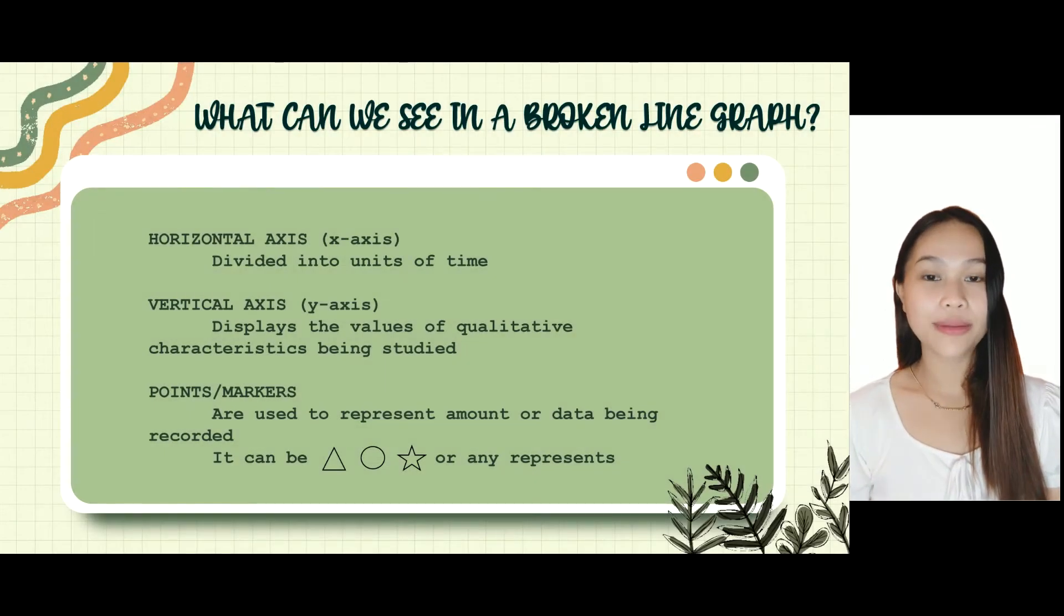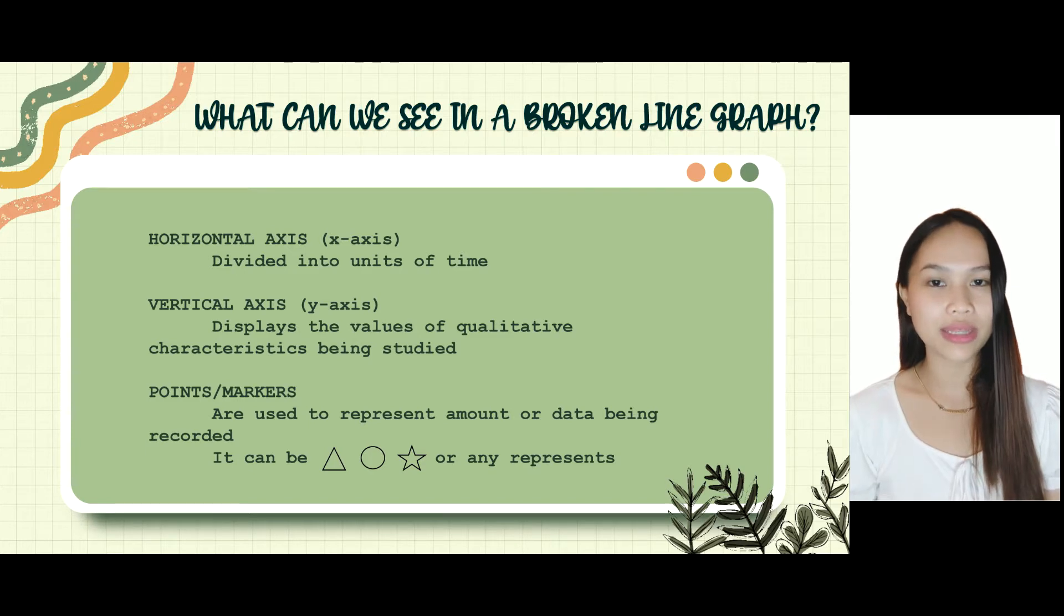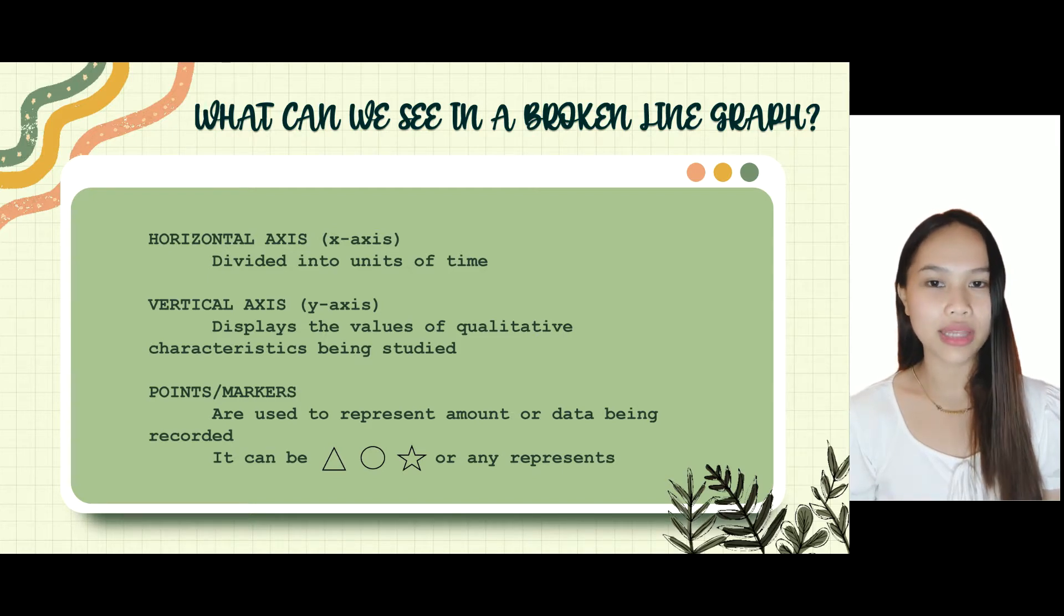What can we see in a broken line graph? First, we have the horizontal axis or the x-axis which is divided into units of time, then the vertical axis which is the y-axis which displays the value of qualitative characteristics being studied, then lastly the pointers or markers that shows the amount or the data being presented, then it can be presented by any kinds of shape, for example stars, circle, and square, or any that can represent.